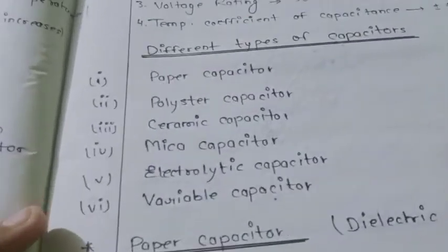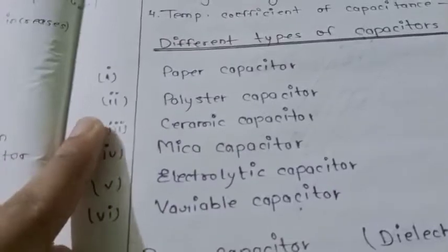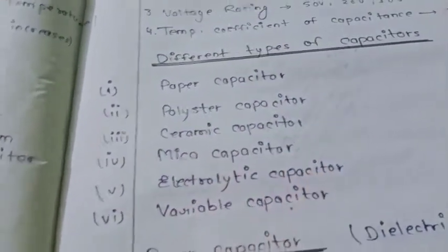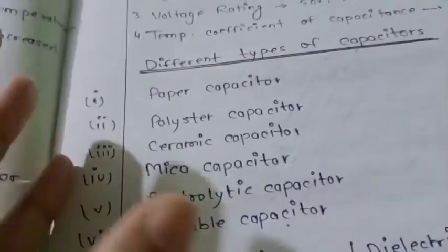There are many types of capacitors: paper capacitor, polyester capacitor, ceramic capacitor, mica capacitor, electrolytic capacitor, and variable capacitor. We will see all these capacitors.